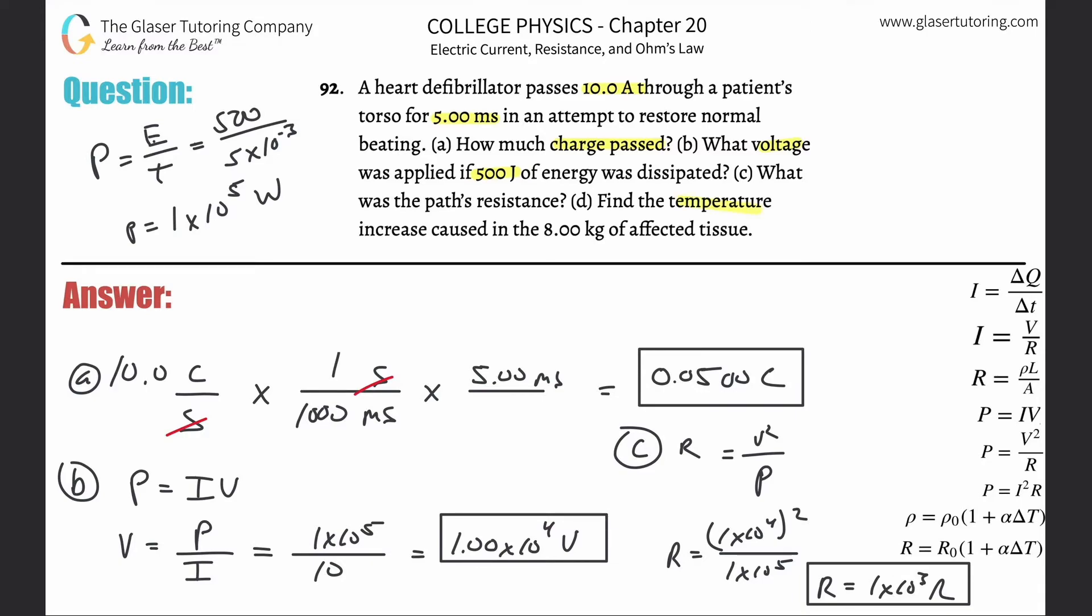And then letter D, find the temperature increase caused by the 8 kilograms of affected tissue. So now what we need to do, let me put it here in blue. So find the temperature increase caused by 8 kilograms of affected tissue. So now what we have to realize is we have to somehow connect this to temperature increase. So we're thinking about Q equals MC delta T. Why? Because they're talking about find the temperature increase, or aka temperature difference. They're telling us a mass of tissue. And I know that I have an energy here of 500 joules. So I can find then, assuming that we know the specific heat of tissue.